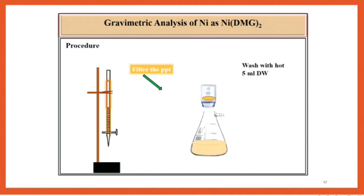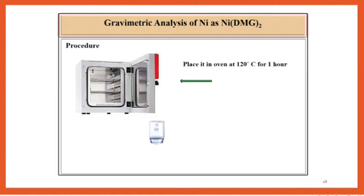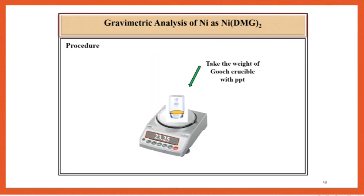Then keep the crucible in oven for 1 hour at 120 degrees centigrade. After 1 hour cool the crucible and take the weight of gooch crucible along with residue and record it in an observation table.